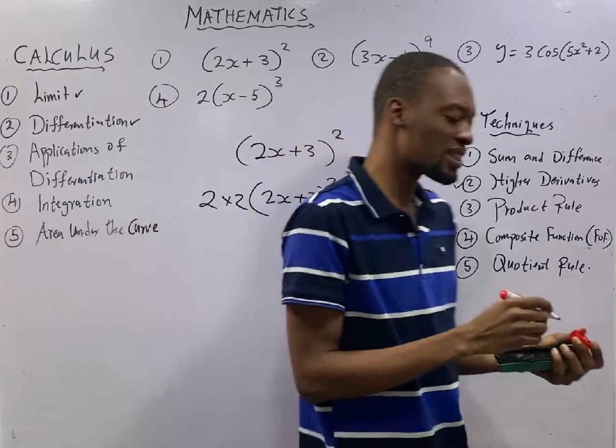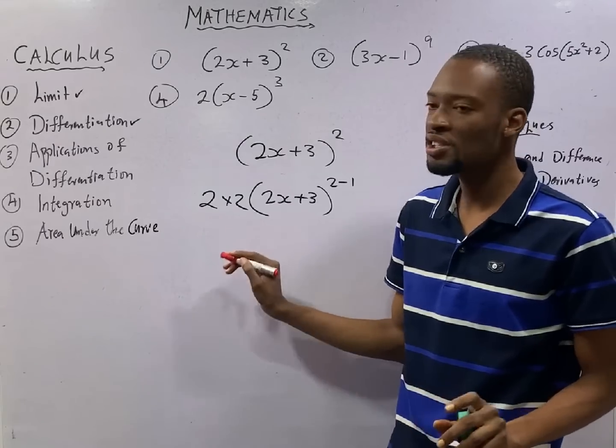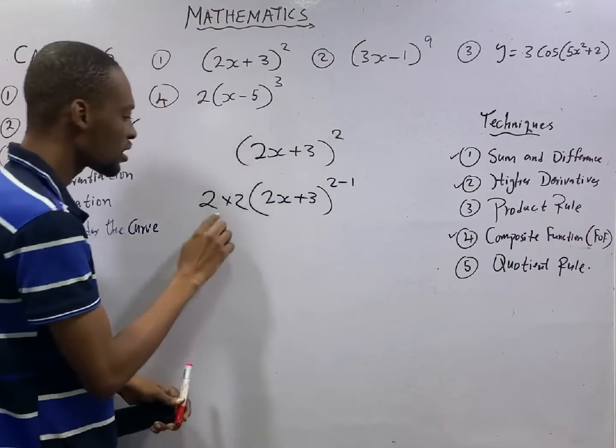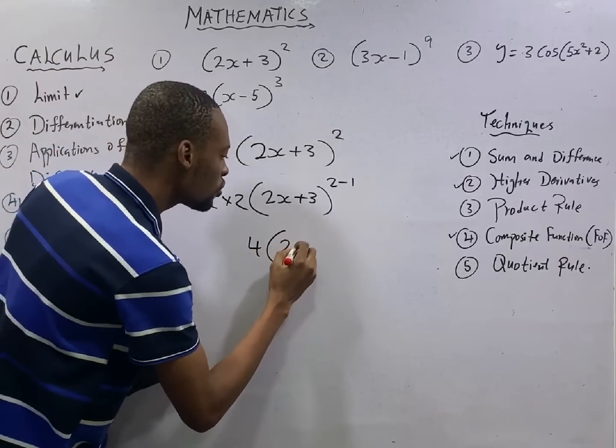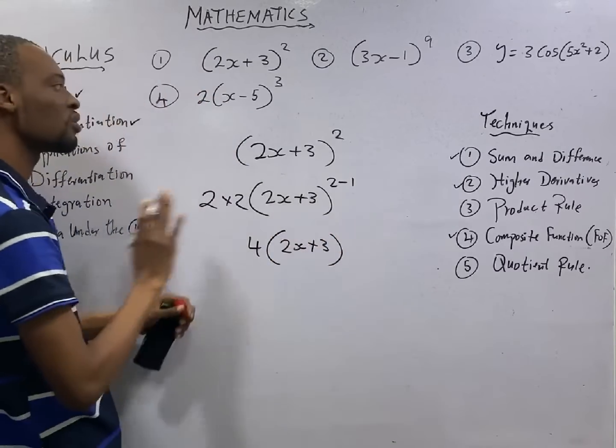So for guys, when they say the u is this, the v is that. No. For composite function, follow this method. Your life will be so so interesting. So that 2 times 2 will be 4. Then 2s plus 3 to the power of 1. This is your answer.